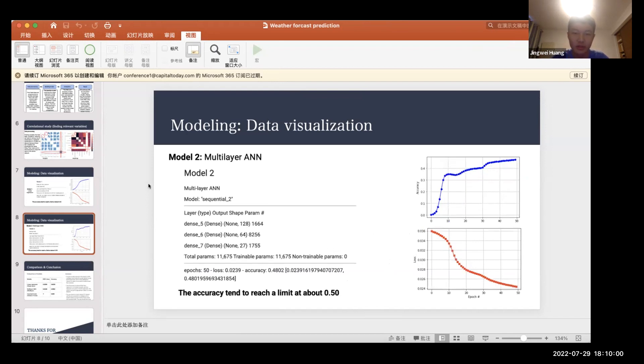And our next model is the multi-layer artificial neural network. We adopted three dense layers in this model. And it can be clearly seen that the accuracy of the model is a bit higher than the first single-layer model. And this accuracy tends to reach a limit of about 50%.